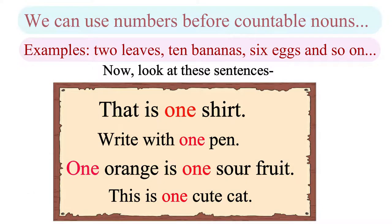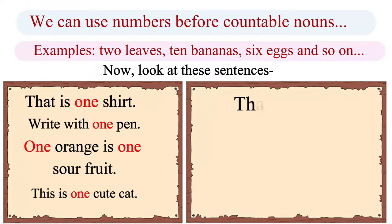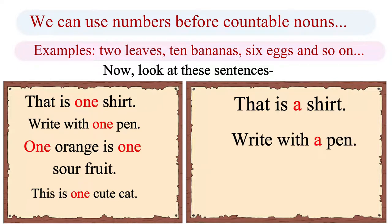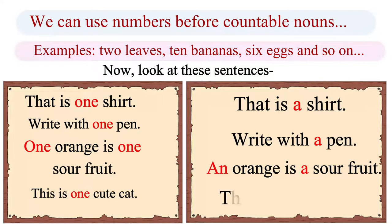Now, listen to these sentences again. But this time with a slight change in each of them. That is a shirt. Write with a pen. An orange is a sour fruit. This is a cute cat.